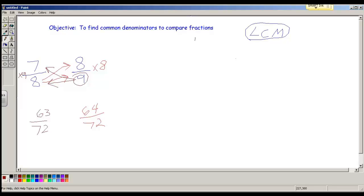So now I have common denominators and I can compare my fractions. So that's the other way you can find common denominators by multiplying the opposite number by the denominator. Let's try one more of those.